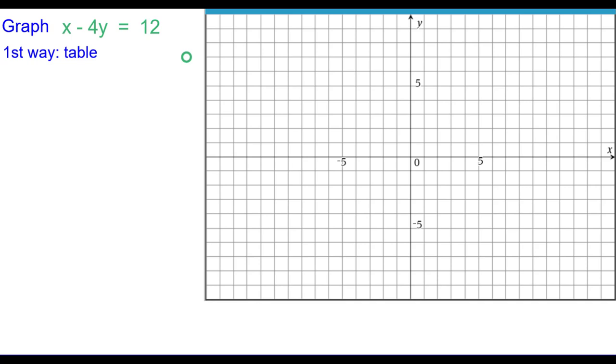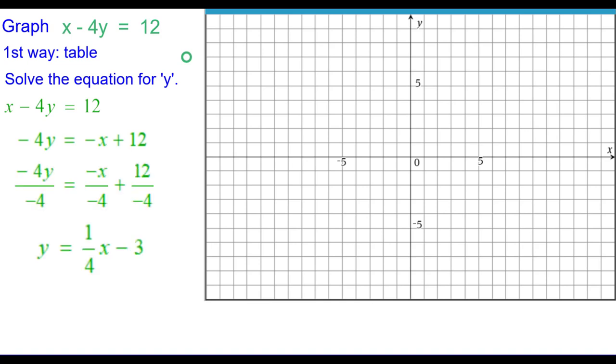The first way is using a table, so we need to solve the equation for y in terms of x. If you want to pause and do that, go ahead and do so, otherwise I'll show you the answer. So we'll subtract x from both sides, divide each term by negative 4 and then simplify. Y is equal to ¼x minus 3.